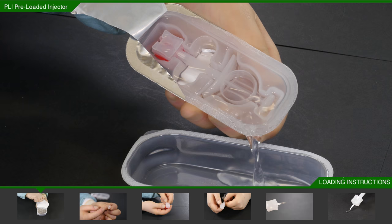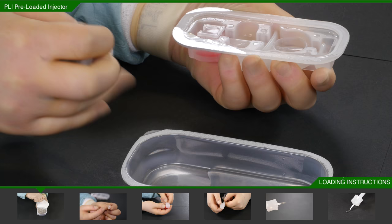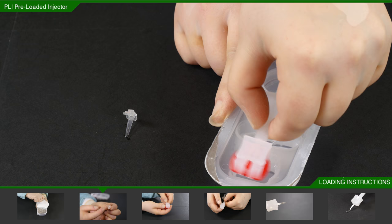Fully retract the foil and remove the PLI from the inner tray with the red nest facing down.